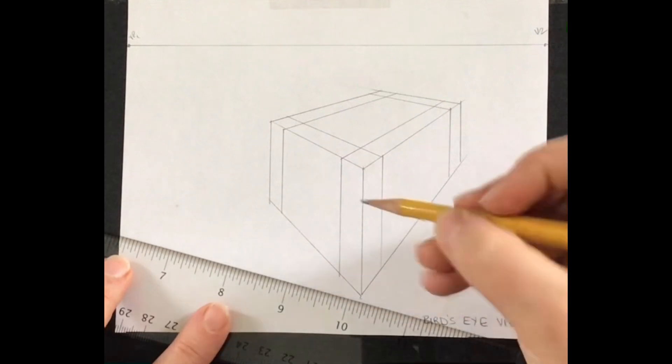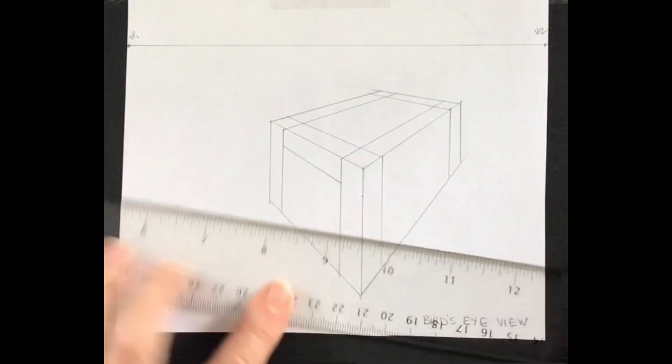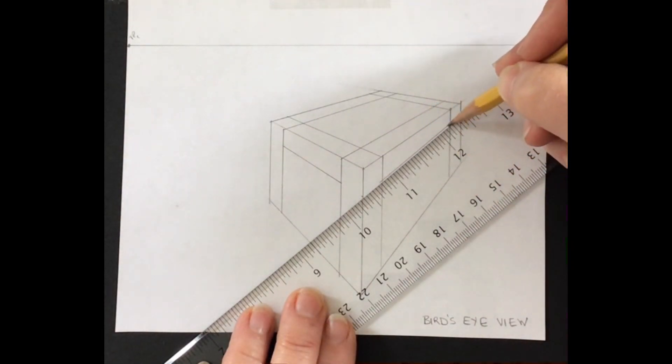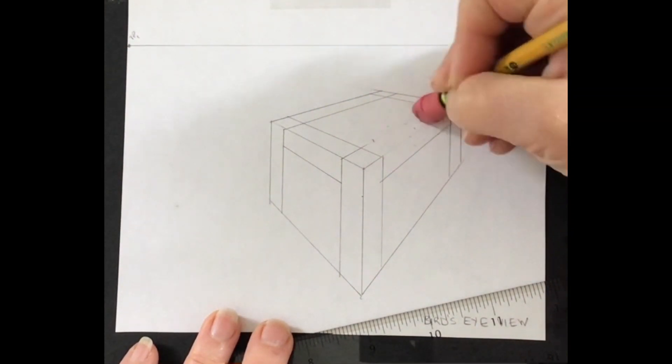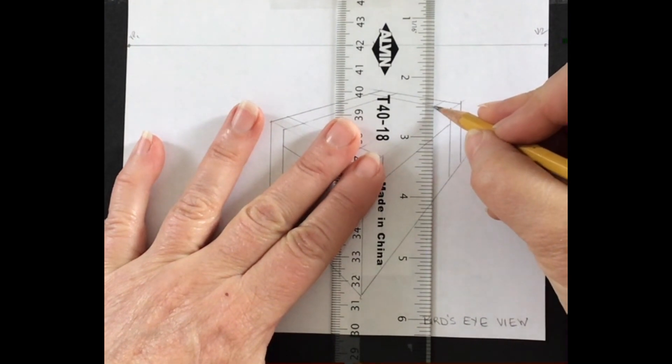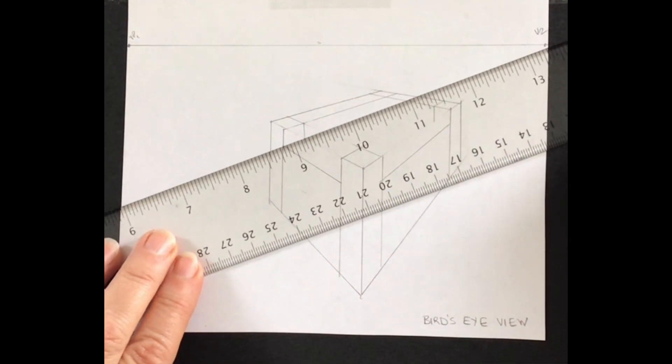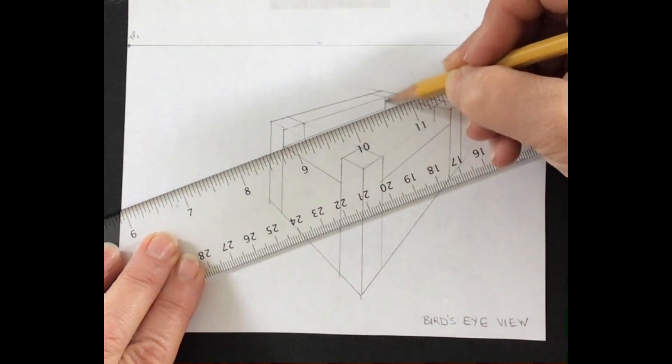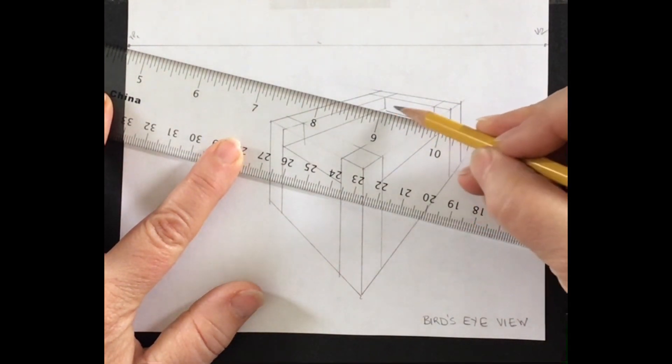So what else do I want to do? I want to drop this line down. I want to line it up there and here. Okay. So next is erasing. I don't need this. I can drop this line down and this line down. Take this to the vanishing point to about here. And then this to the vanishing point to about there.